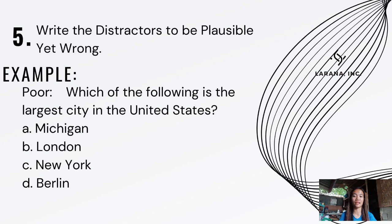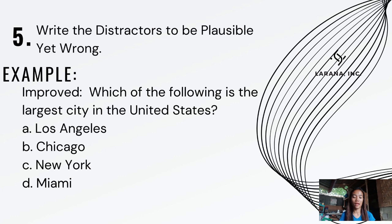Next, write the distractors to be plausible yet wrong, because distractors would be useless if they are obviously incorrect. For example, a poor item asks 'Which is the largest city in the United States?' with distractors Michigan, London, and Berlin — London is England's capital and Berlin is Germany's, making the answer New York obvious. The improved version uses Los Angeles, Chicago, New York, and Miami — all well-known U.S. cities — so unprepared students must actually think before answering.